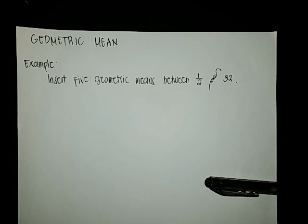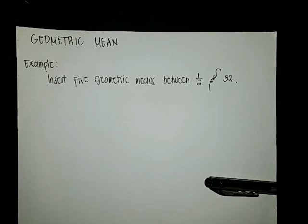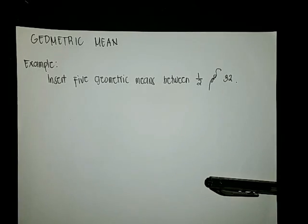In this video, I will show you how to calculate or how to insert geometric means in a geometric sequence. Just like with arithmetic means, on geometric mean we are going to insert terms or numbers between the first and the last terms. Since this is a geometric sequence, the terms must have a common ratio. Therefore, we need to solve for the common ratio.